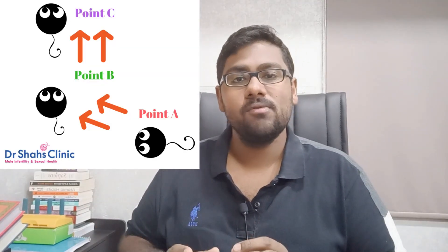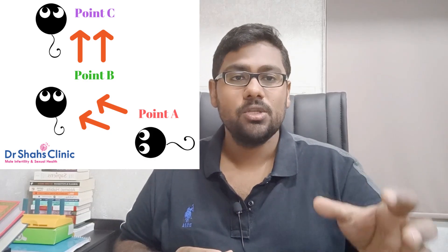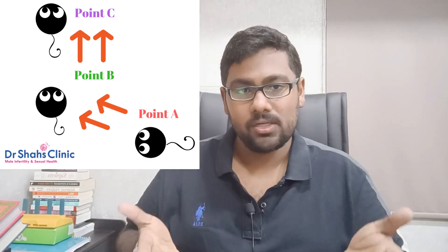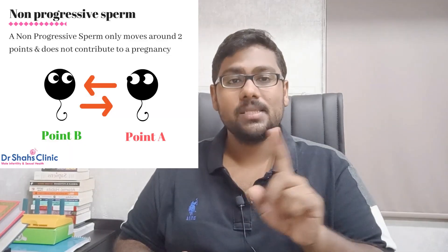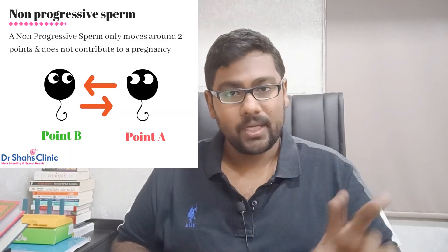Coming back to the topic of total sperm motility — sperm motility is usually of two types: progressive sperm motility and non-progressive sperm motility. If you look at the image on the right, a progressive sperm is one that moves from point A to point B to point C in a given microscopic field when a semen analysis is done. On the other hand, non-progressive sperm will move in small circles, as shown in the figure, or vibrate around two particular points — point A and point B.